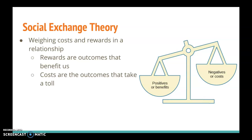There's this sort of equation posited by social exchange theory that says our relational satisfaction equals the rewards of the relationship minus the costs. If the costs of the relationship outweigh the rewards, we are likely to be unsatisfied. But if the rewards and costs are balanced, or if the rewards outweigh the costs, this usually leads to a positive evaluation of the relationship and satisfaction within it.